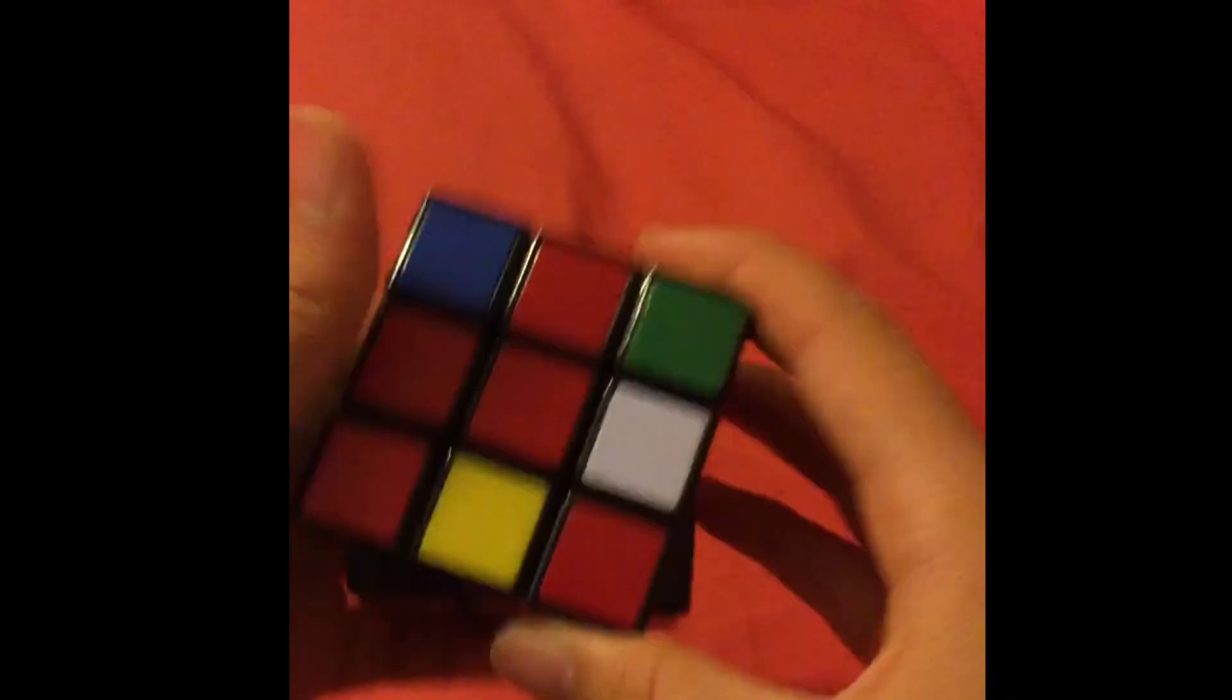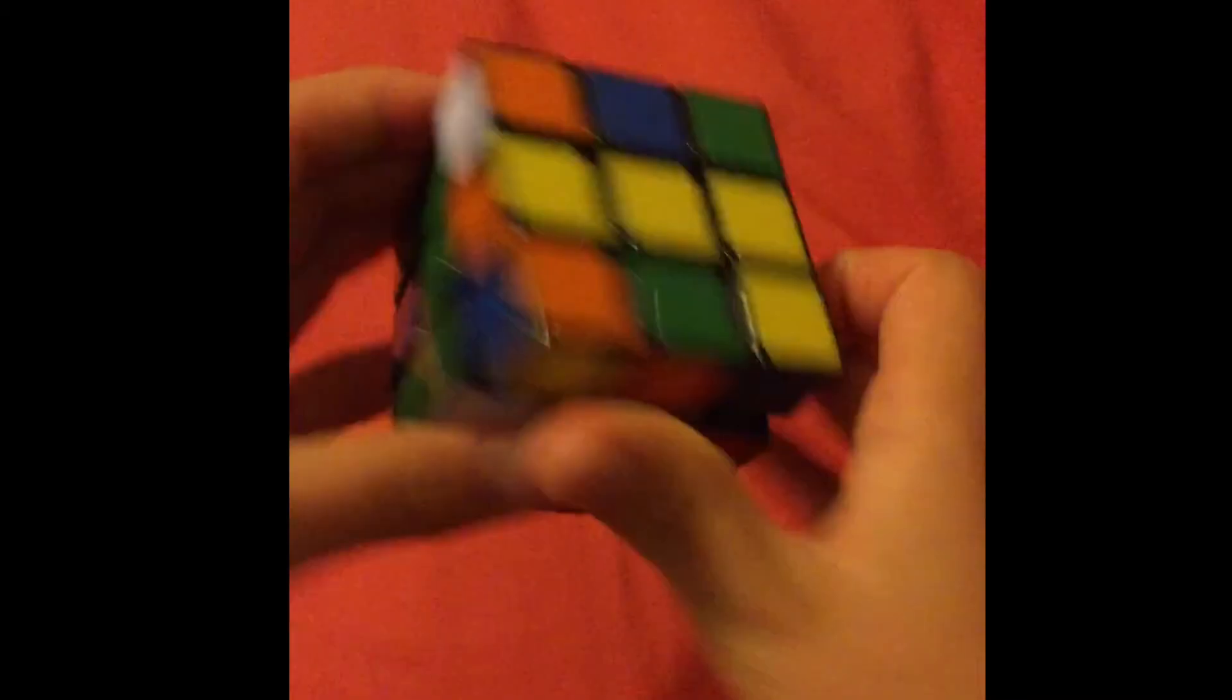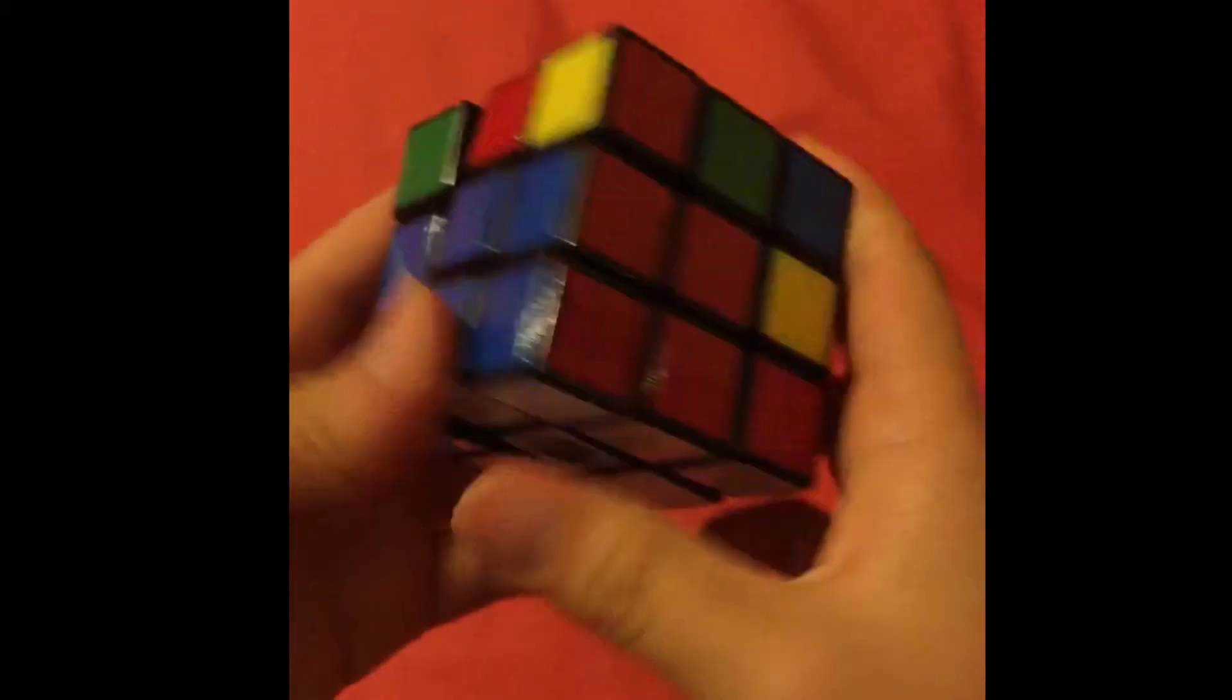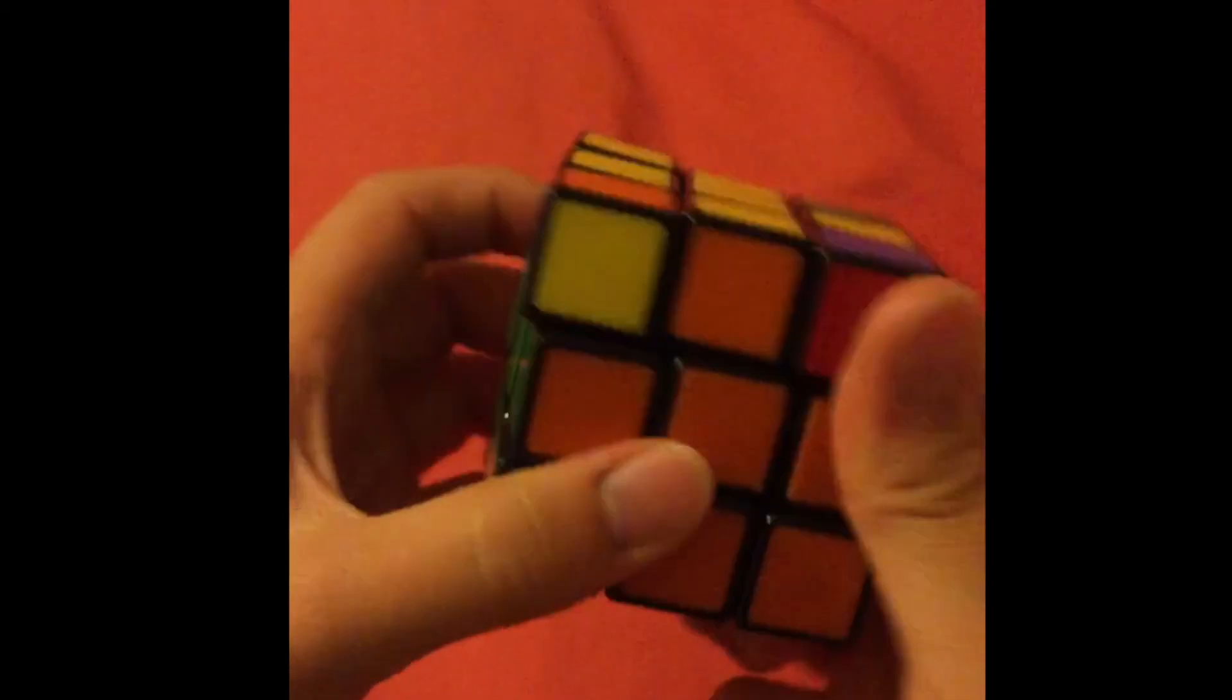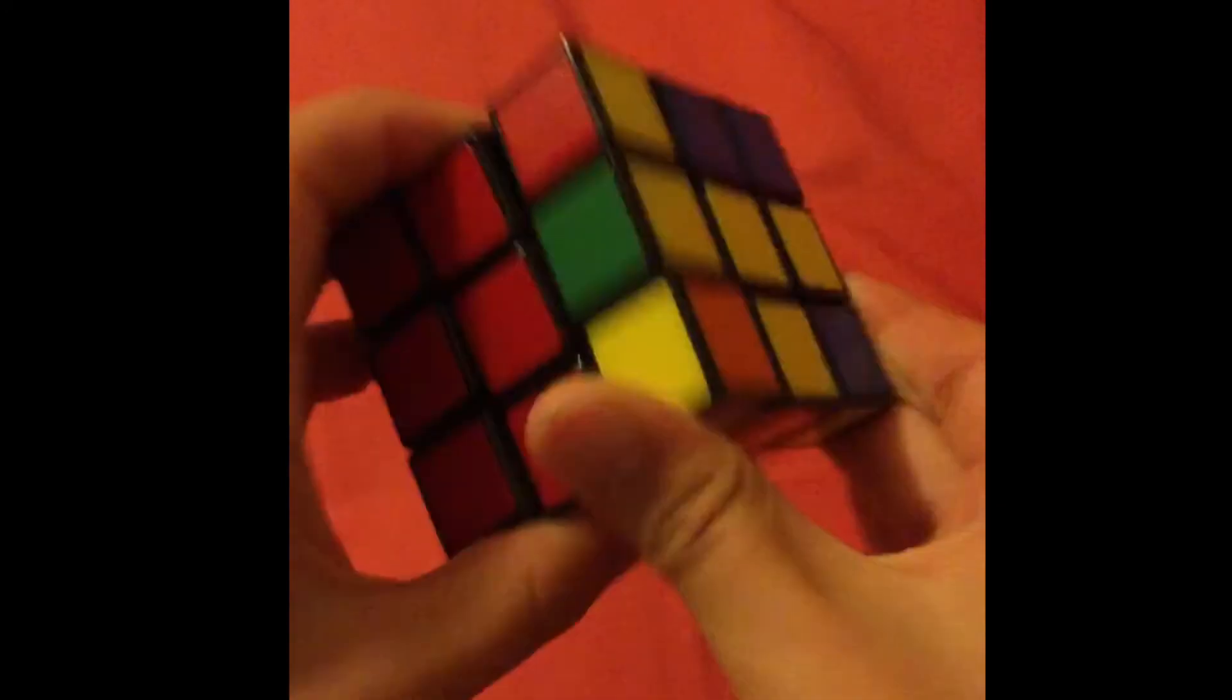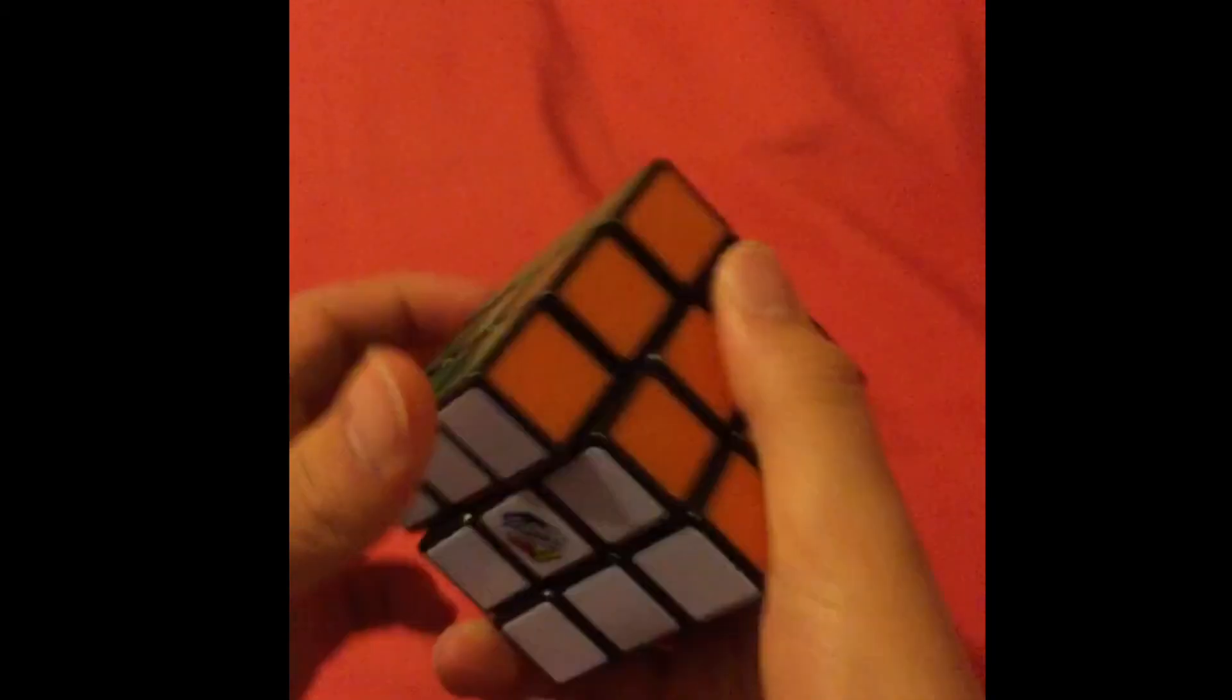Solving the 3x3x3 Rubik's cube means starting in a random configuration of the faces and applying a sequence of permutations, known as algorithms, until one arrives at the configuration where all the cuboids on each face have the same colour. The group representation of the Rubik's cube gives us a mathematical language with which we can describe the algorithms.